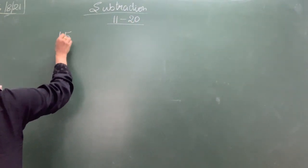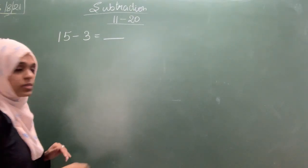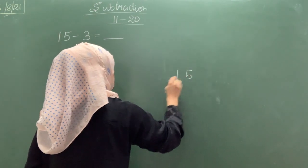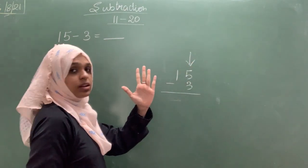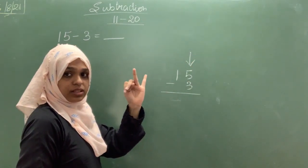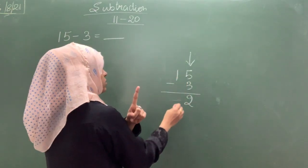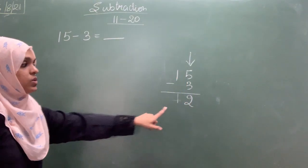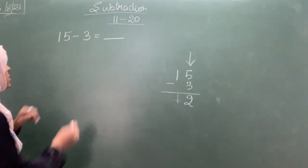Suppose I am writing 15 minus 3. What will be your answer? Our vertical one is 15 minus 3. What will be your answer? 5 is there, cut down 1, 2, 3. How much remaining? 2. Write down 2. 1 minus 0 will be 1 only. So answer is 12. Let us check.